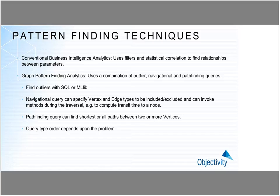You can find outliers with SQL or ML components. Then you can do navigational queries to explore through the graph, perhaps selectively, or pathfinding queries to find the shortest or most effective routes between things. The order in which you apply these techniques depends entirely on the problem — you might start by finding outliers and then do a pathfinding query, or start with a straightforward GraphX algorithm and then do more complex pathfinding, perhaps finding the leaves on the graph.